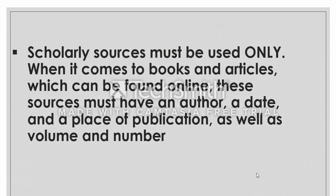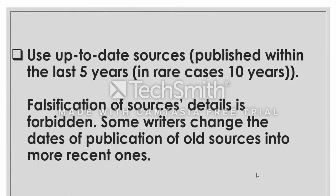Scholarly sources must be used when it comes to books and articles found online. These sources must have an author, a date, a place of publication, as well as a volume and number — all of which we will cover in the next section on referencing. Always use up-to-date sources published within the last five years, or in rare cases ten years. Do not use sources from the 1950s, because information changes every day. Always use newer editions within the five to ten year range.